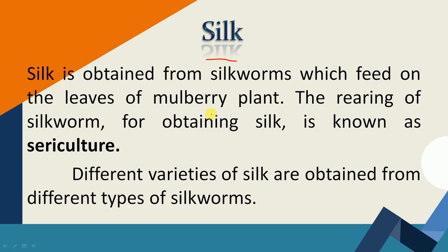Silk is obtained from silkworms which feed on the leaves of mulberry plants. The rearing of silkworms for obtaining silk is known as sericulture. Silkworm का rearing — उसको पालना — और हम पालते क्यों हैं ताकि हमें उससे silk मिल पाए, उस process को sericulture कहते हैं.